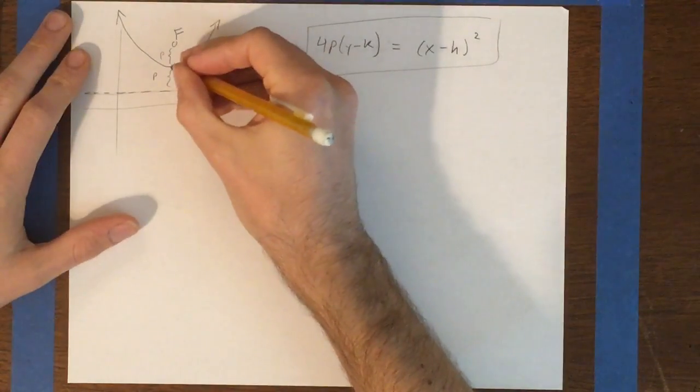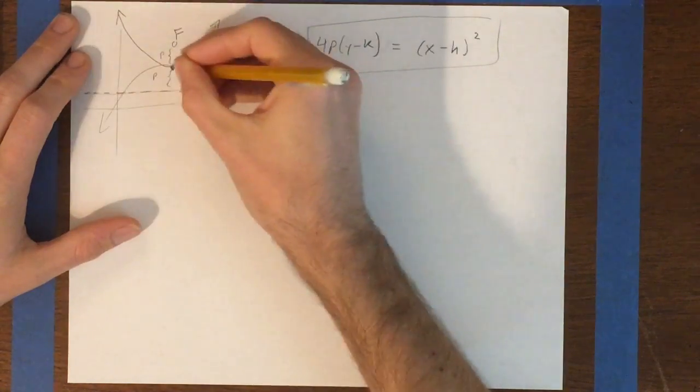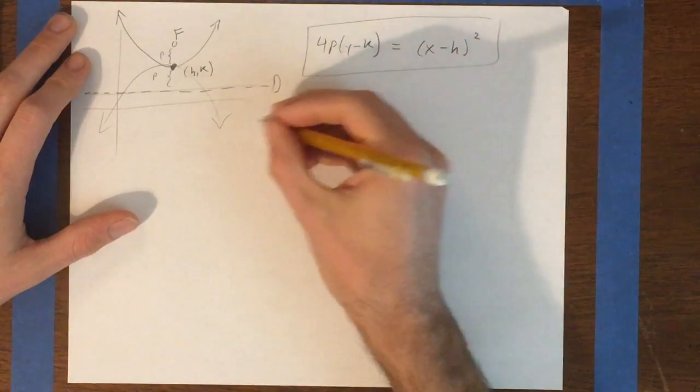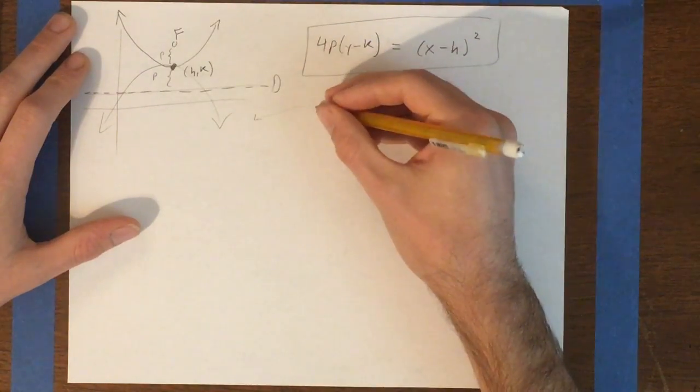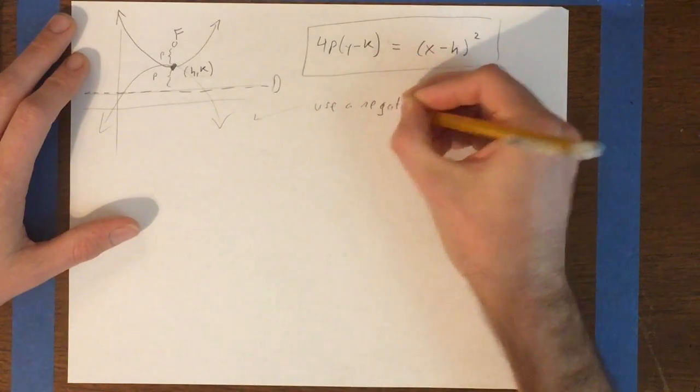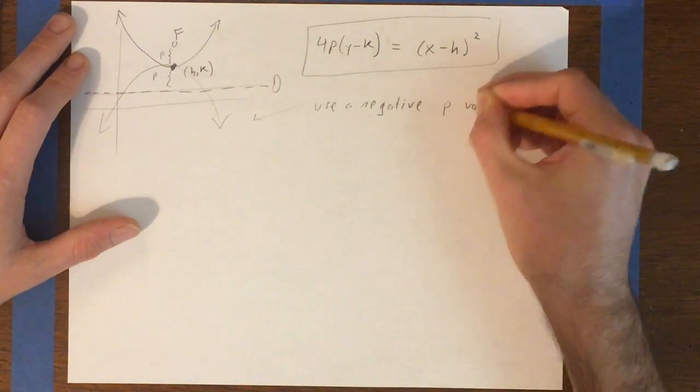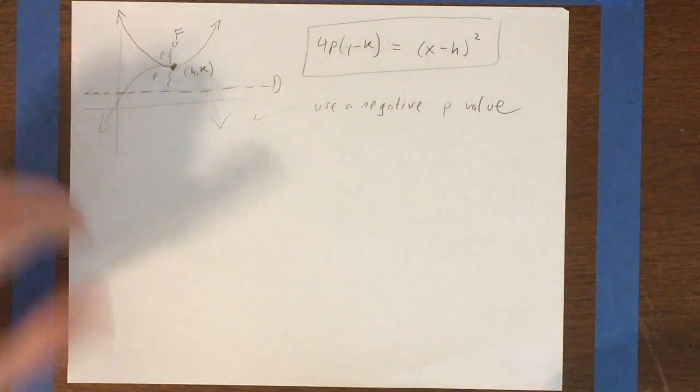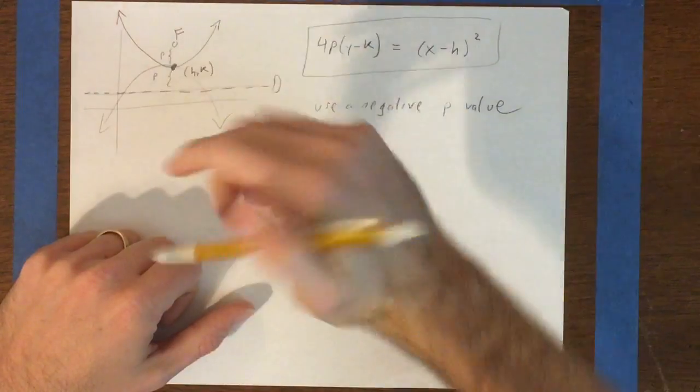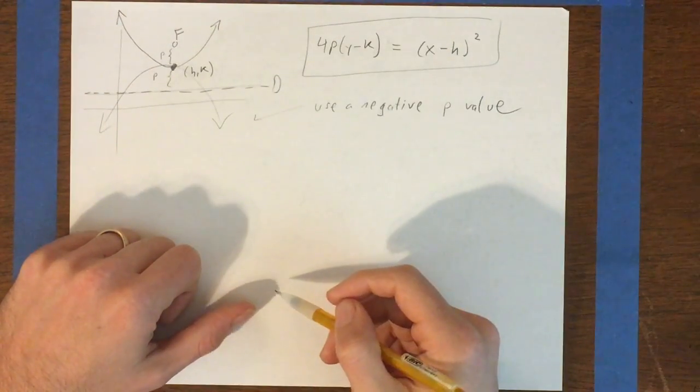Suppose you want this thing to go down instead of up. All you've got to do there is use a negative p value. If you take p and make it negative, then you will reflect this thing. It'll flip upside down and you'll start going down instead of up.